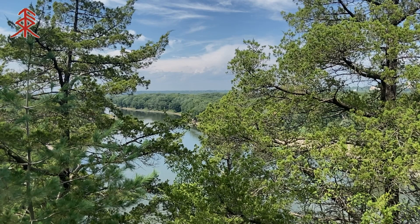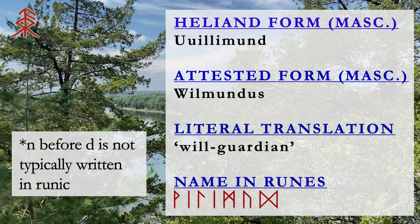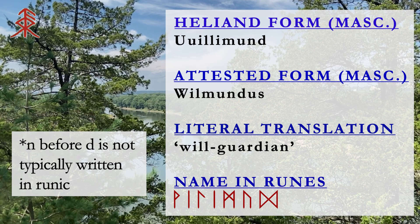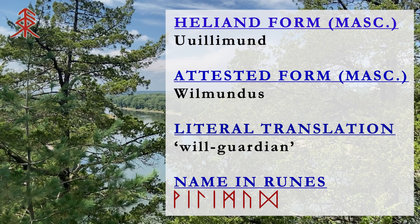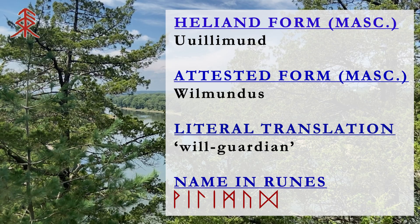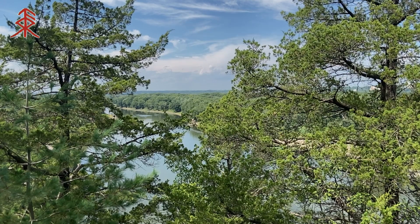We have one more will name here for our seventh, and that is Willemode — literally 'will guardian.' The Latinized ending on the attested form tells us that this name was for a man. This is one who is a protector or a guardian, and of course possesses a strong will — being able to carry out one's own will. It could also be understood as someone who is a protector or guardian of the will, protecting one's will or oneself in a sense.